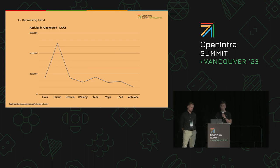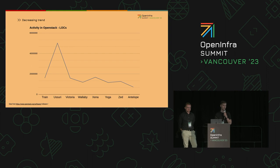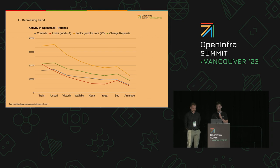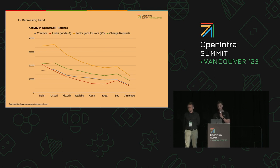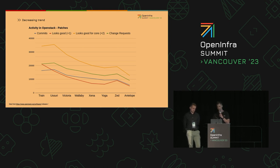The number of produced lines of code with each release cycle is slowly decreasing as well, so as a community we probably produce less and less code with each release cycle. Logically with that, the number of commits and feature requests is going down. Also the number of reviews needed for those changes is going down, both by regular users but also by core reviewers.